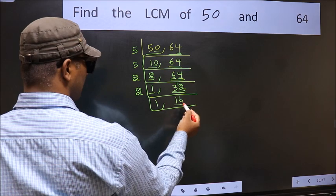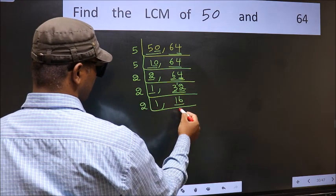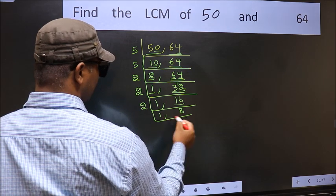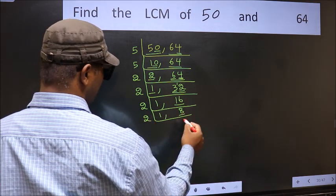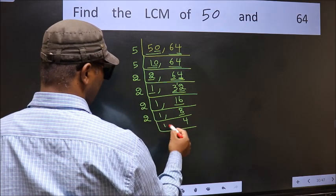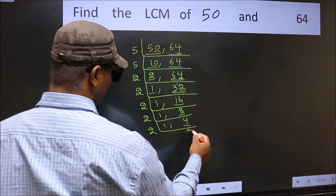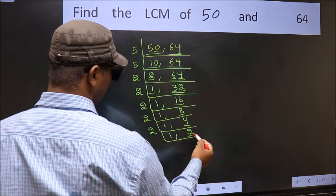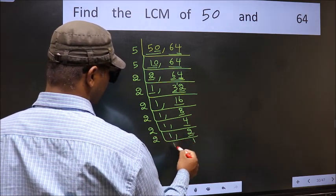Now here we have 16. 16 is 2 eights is 16. Now we have 8. 8 is 2 fours is 8. Now we have 4. 4 is 2 twos is 4. Now we have 2. 2 is a prime number, so 2 ones is 2.